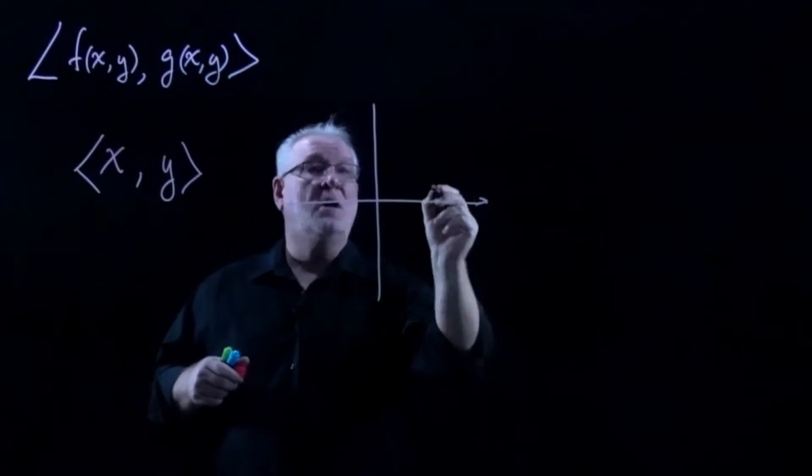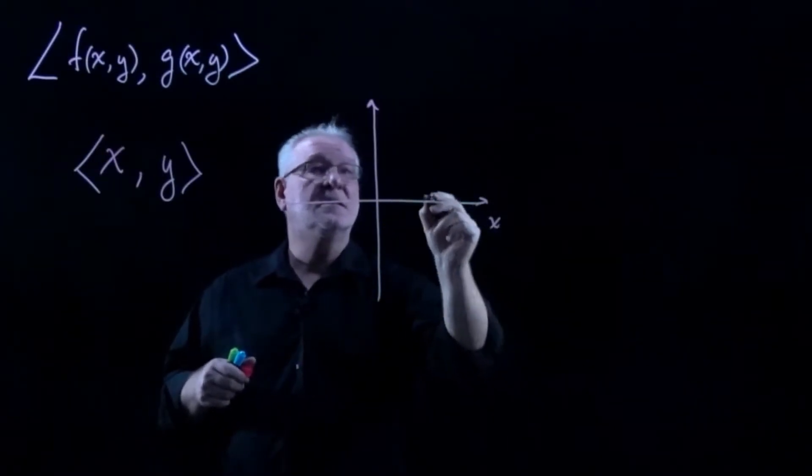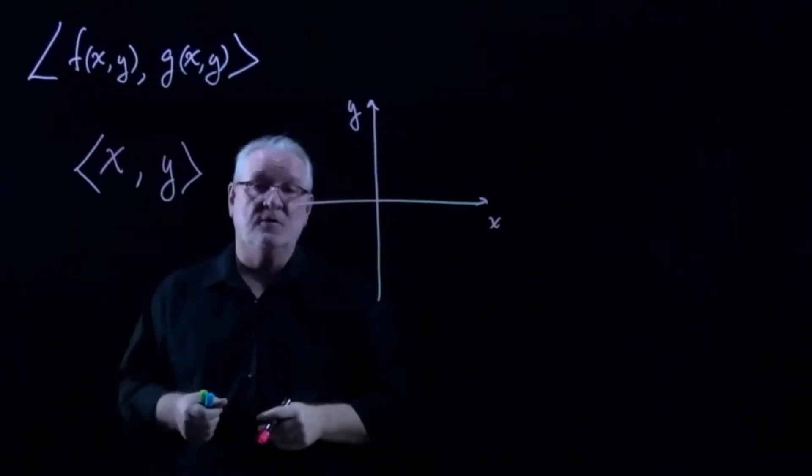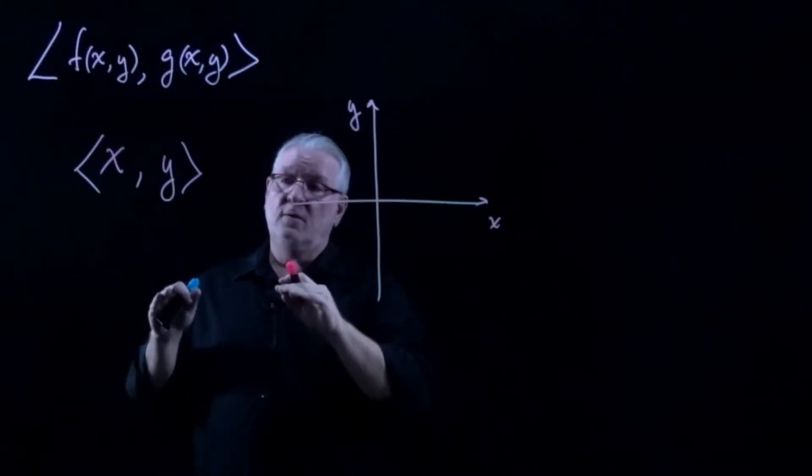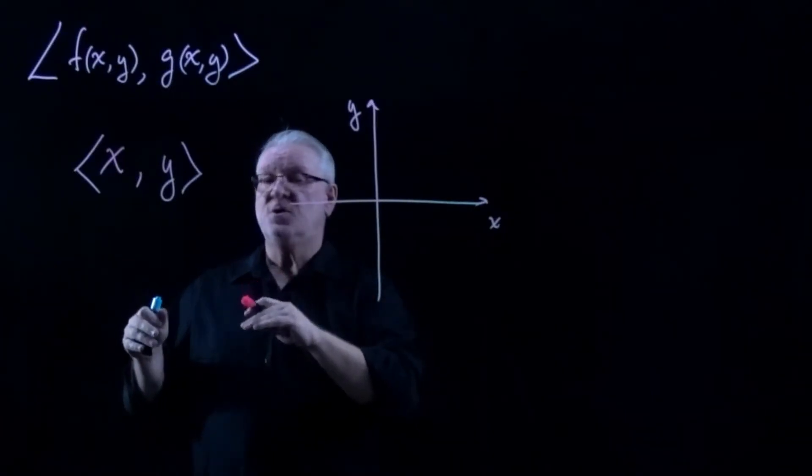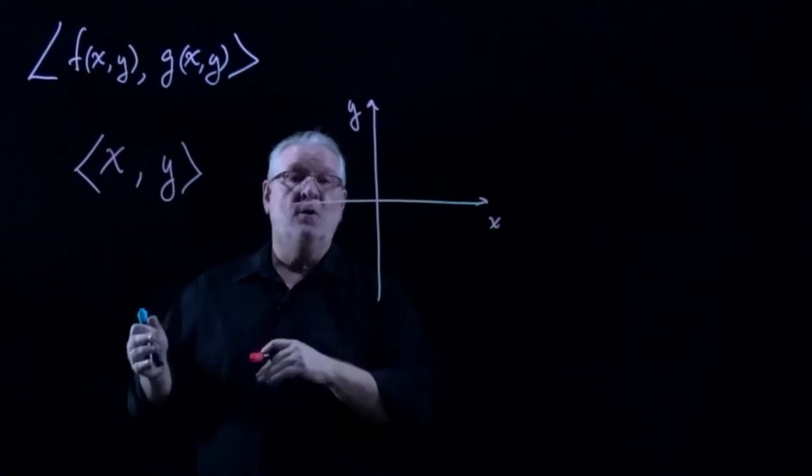So let's start with an x,y axis and consider the behavior of this particular vector field. Well, we know that as x and y get larger, the magnitude of the vector (x,y) will also get larger.